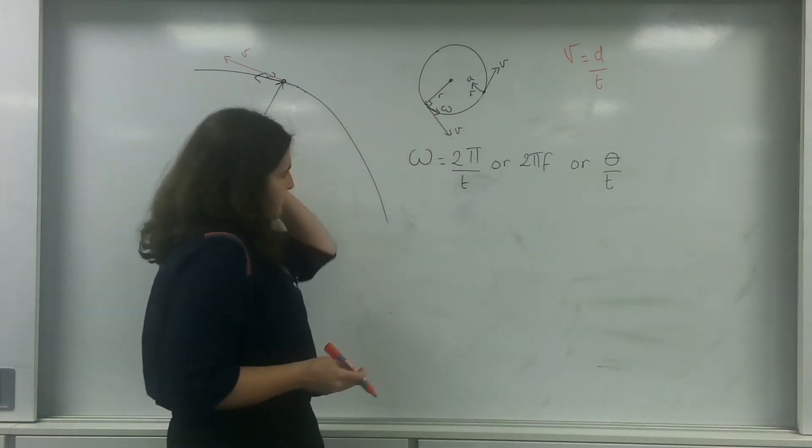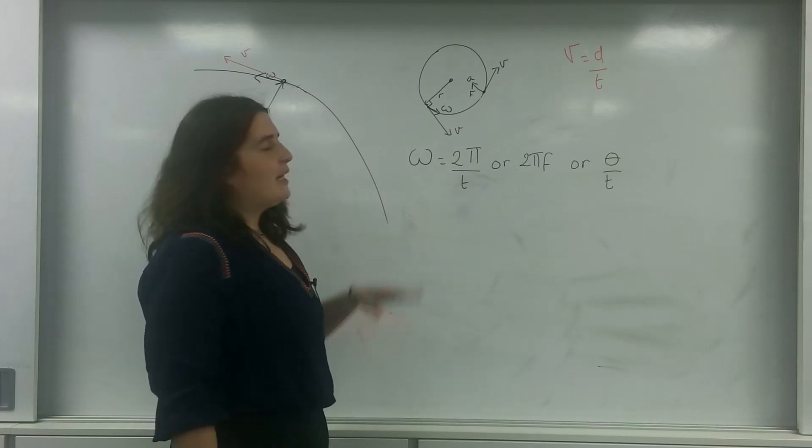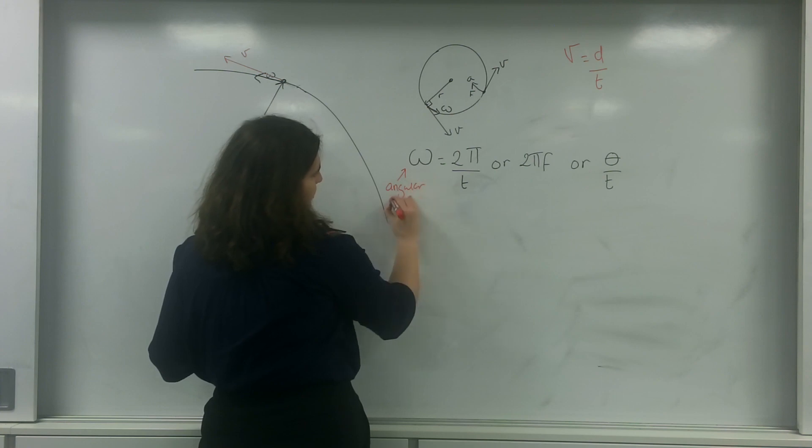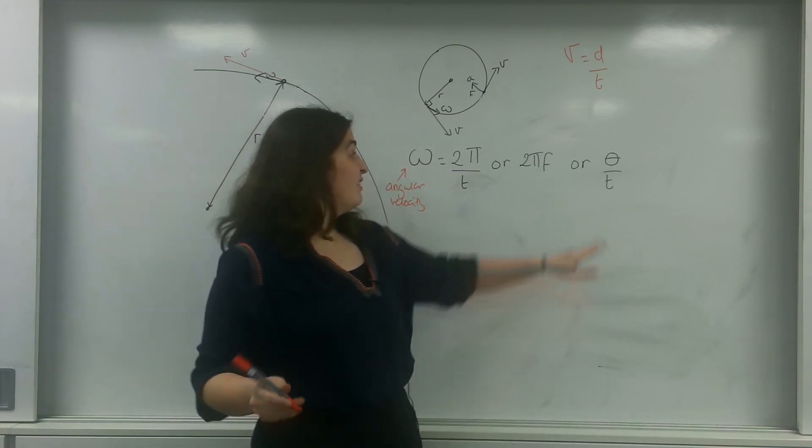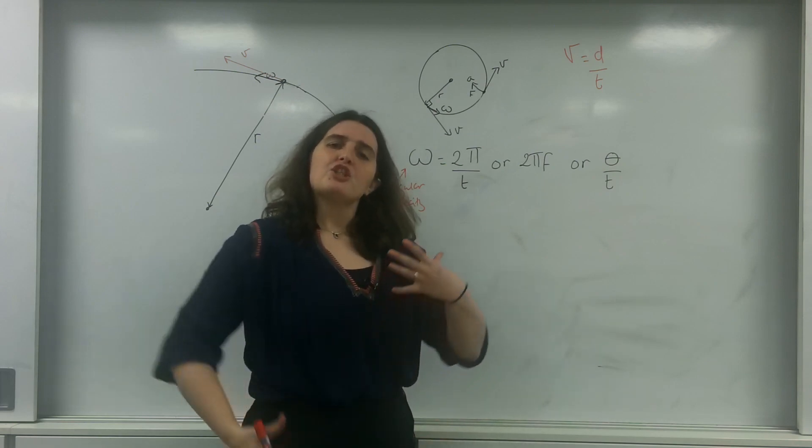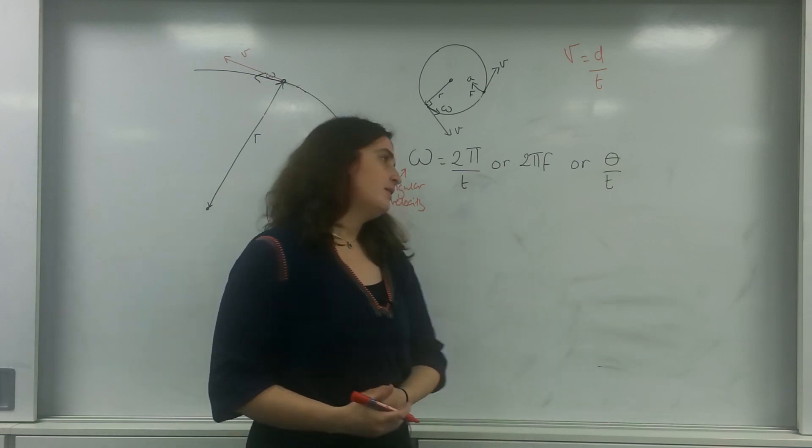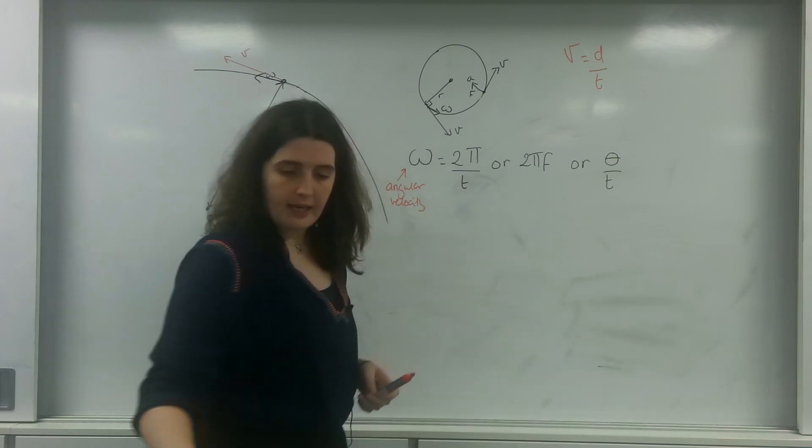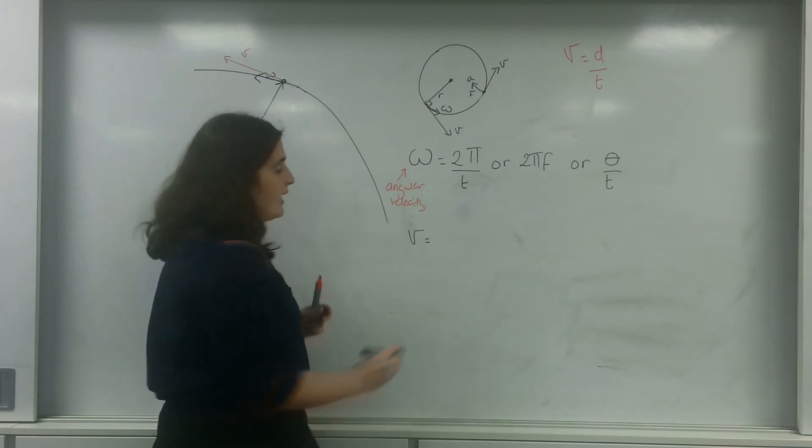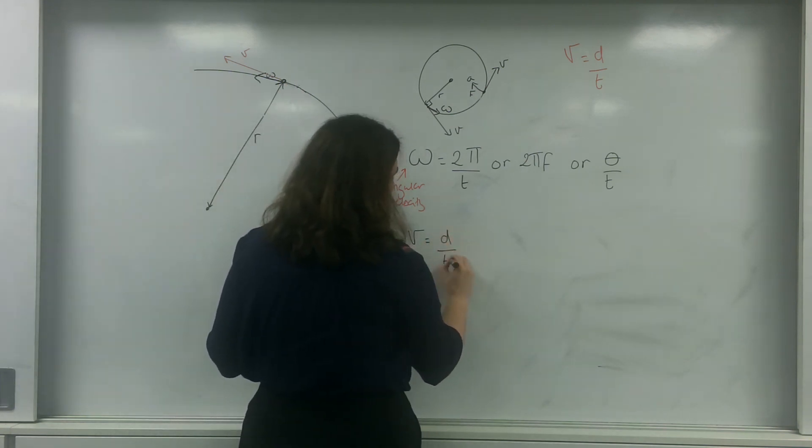So, in a previous video, I spoke about this letter omega. And omega is angular velocity, and this is how much we're spinning in a time. I'm going to try and relate this to the tangential velocity, V. So, V is, of course, displacement over time.